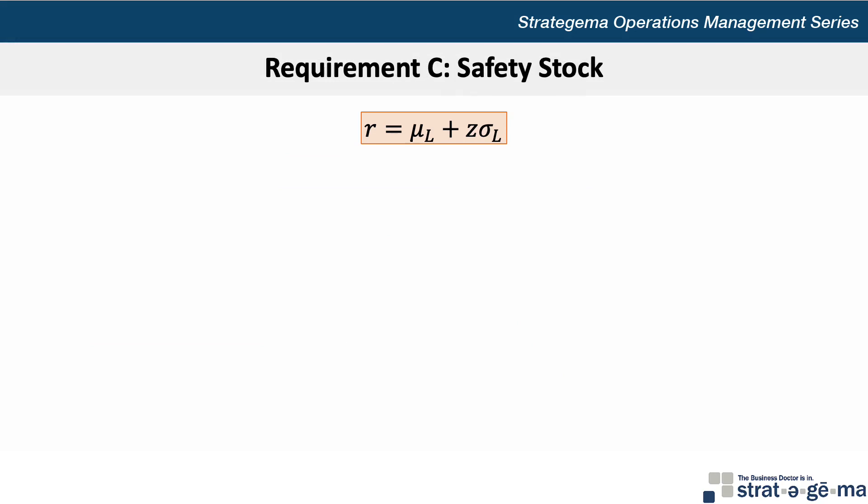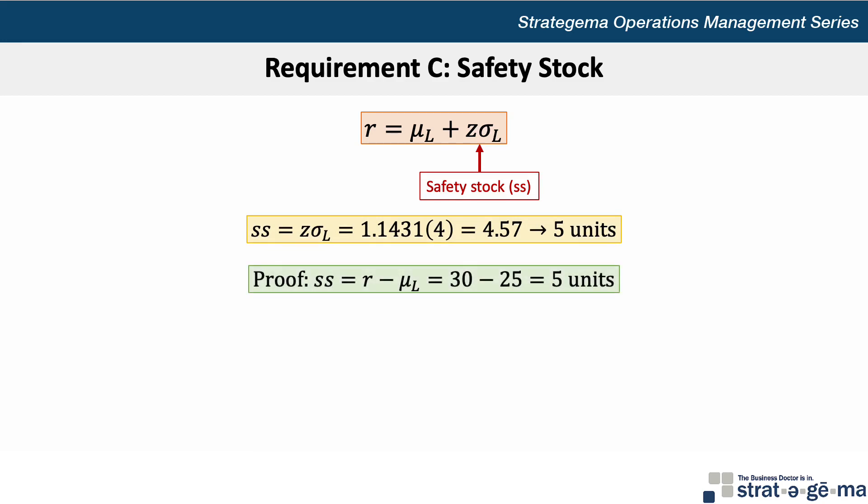For requirement C and determining the safety stock, we actually already calculated it. In the formula for the reorder point, the safety stock is actually the Z times sigma L term. So safety stock equals Z of 1.1431 times the standard deviation of 4 to get 4.57 or 5 units. We can also prove this by working backwards from our reorder point by taking R minus the lead time demand or 30 units minus 25 units equals 5 units.